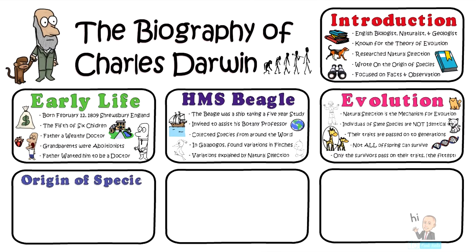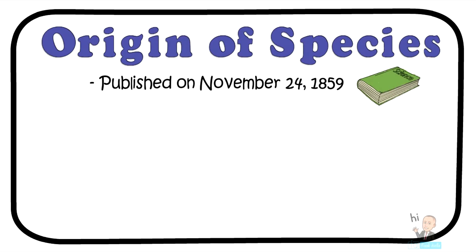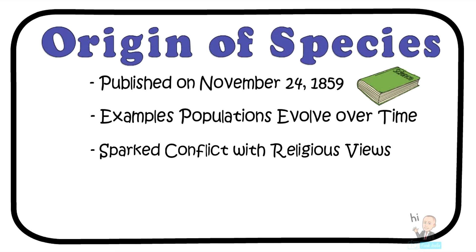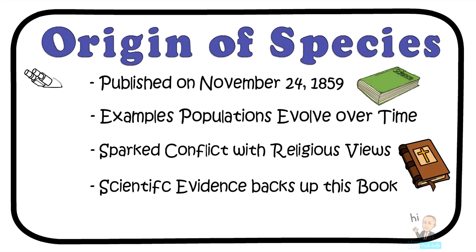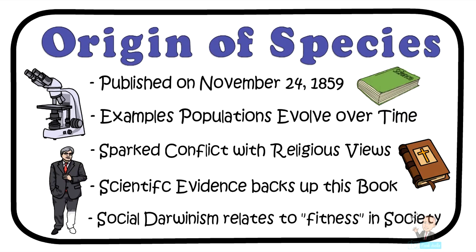Darwin's famous book On the Origin of Species by Means of Natural Selection was published on the 24th of November 1859. One could argue that this book changed the way our society looked at the world. It provides examples of populations evolving over time. The publication sparked conflict with religious views, including opposition to creationism and the biblical age of the earth. Years later, scientific evidence backed up the book as more technology became available to the scientific community. The idea of social Darwinism also came about — the theory that individual groups and people are subject to the same Darwinian laws of natural selection as plants and animals.